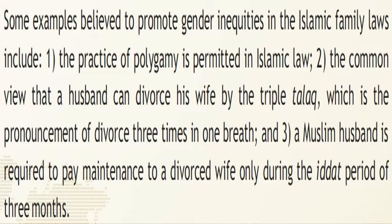Some examples believed to promote gender inequalities in Islamic family law include: the practice of polygamy — that is, having more than one wife — which is permitted in Islamic law; the common view that a husband can divorce his wife by triple talaq, which is a pronouncement of divorce three times in one breath; and the requirement that a Muslim husband pay maintenance to the divorced wife only during the iddath period of three months. These provisions are seen as further promoting gender inequality.